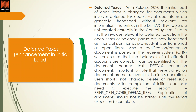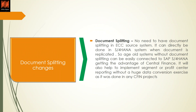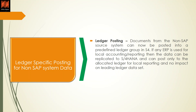Document splitting changes: there is now no need to have document splitting in ECC systems — it can be done directly in the S/4HANA system when the document is replicated. Age-old systems like classic GL or any system which does not have document splitting activated can be easily connected and take advantage of S/4HANA transformation. This will also help to implement segment or profit center reporting without a huge data conversion exercise, which was previously required since it was not supported.